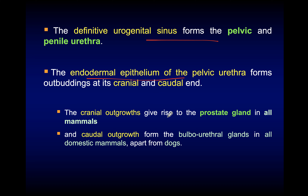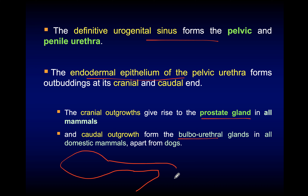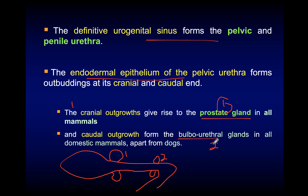The endodermal epithelium of the pelvic urethra forms outbuddings at the cranial and caudal ends. The cranial buds are called the prostate gland, and the caudal one forms the bulbourethral gland. So we have two outgrowths from the pelvic urethra: the cranial one becomes the prostate gland, and the second becomes the bulbourethral gland.